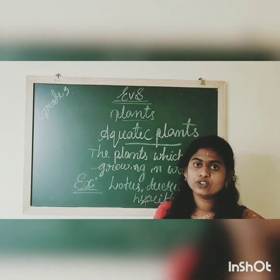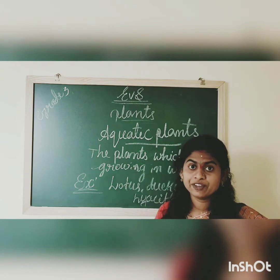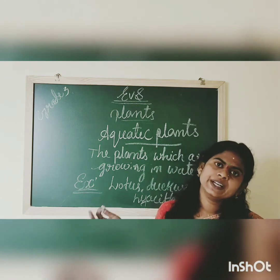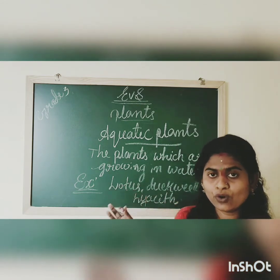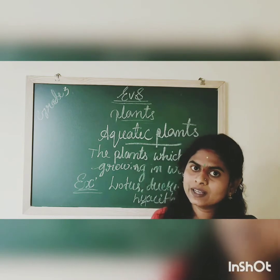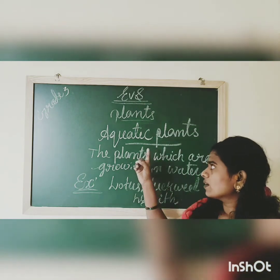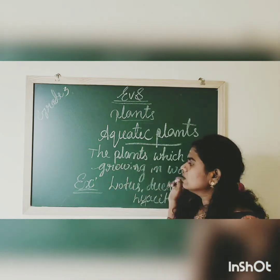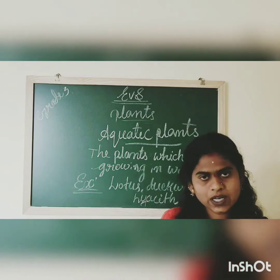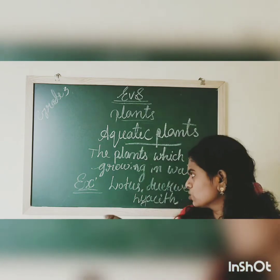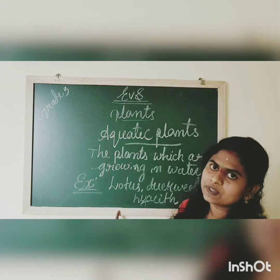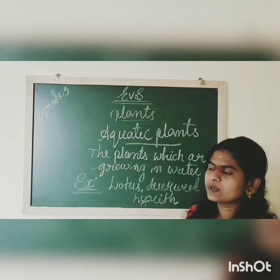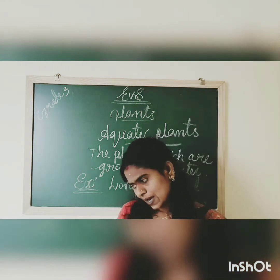Plants can be found everywhere — in deserts, mountains, and marshy regions — but all plants cannot grow in all regions due to their climate. So aquatic plants are the plants which grow in water. Examples for aquatic plants are lotus, duckweed, and hyacinth.